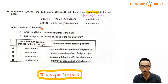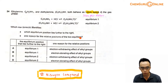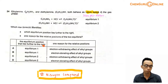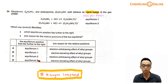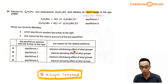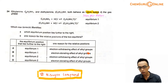So which row correctly identifies which equilibrium position lies further to the right, and one reason for the relative positions of the two equilibria? I have options A, B, C, D. The equilibrium position that lies further to the right means the favouring of this acid-base reaction. A and B say equilibrium 1 is favoured; C and D say equilibrium 2, for diethylamine, is favoured.